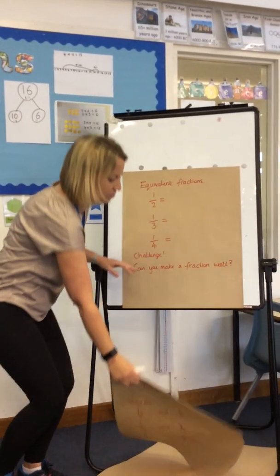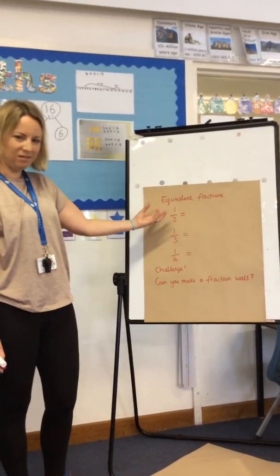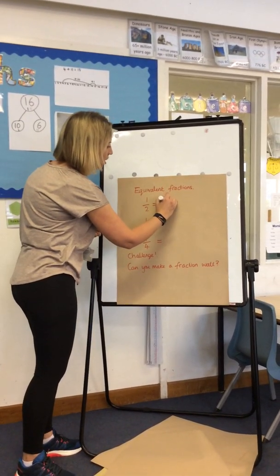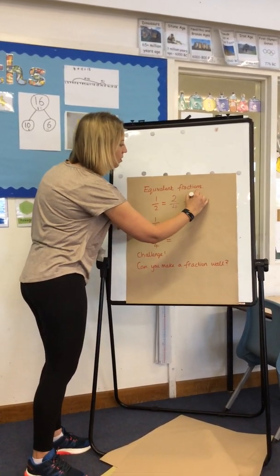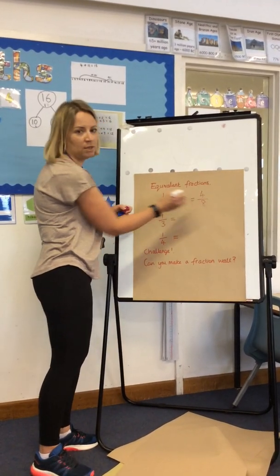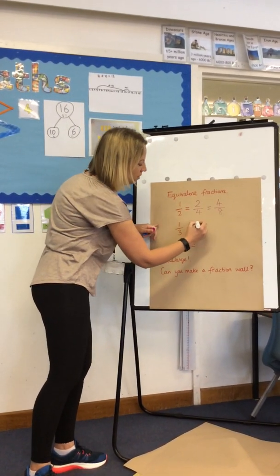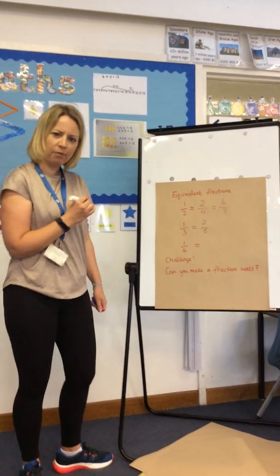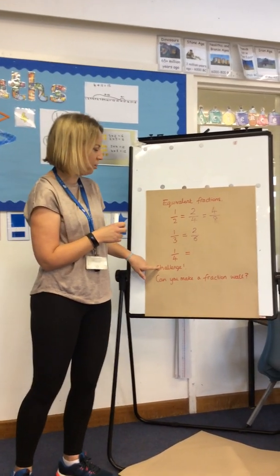Equivalent fractions — this is your final challenge. Equivalent means it's the same but written slightly different. One half is equivalent to two quarters, and it's also equivalent to four eighths. You should start to see a relationship between these numbers — maybe you could tell an adult about them. One third — that's an interesting one — is equivalent to two sixths. One quarter: I wonder if you can think of something equivalent to one quarter. That could be an extra challenge.